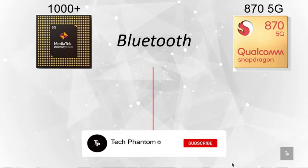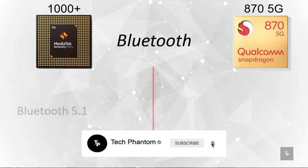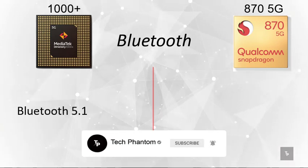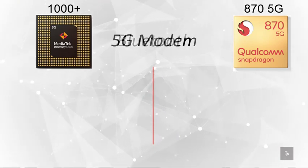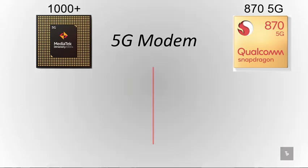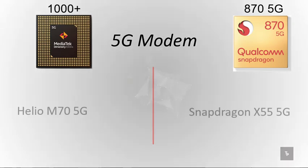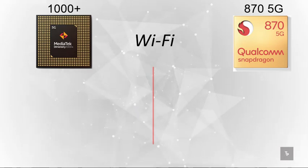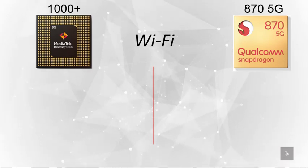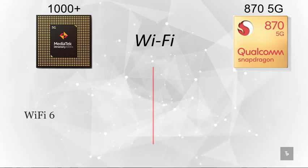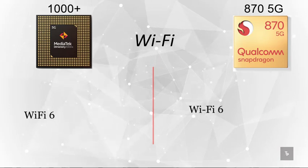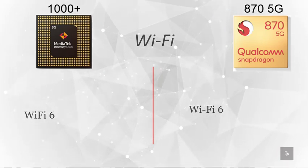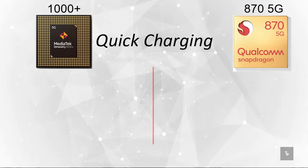On the Bluetooth side, the MediaTek Dimensity 1000 Plus supports Bluetooth 5.1, while the Snapdragon 870 comes with the newer Bluetooth 5.2. For the 5G modem, the MediaTek comes with the Helio M70 5G modem, whereas Qualcomm uses their integrated 5G solution.